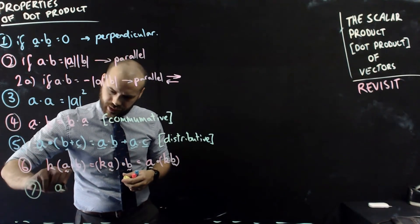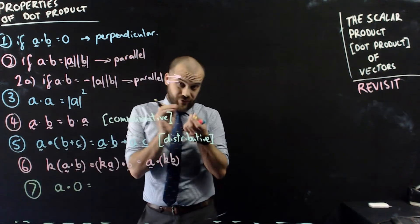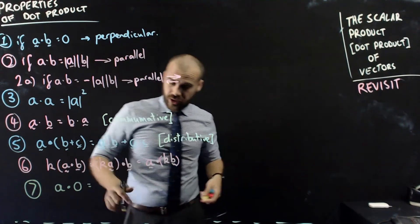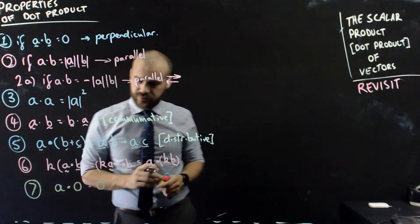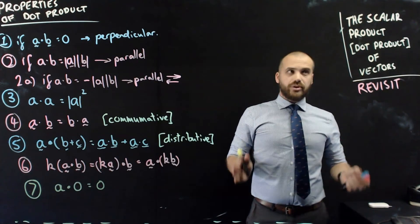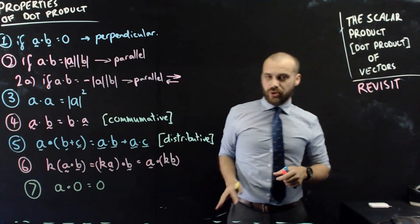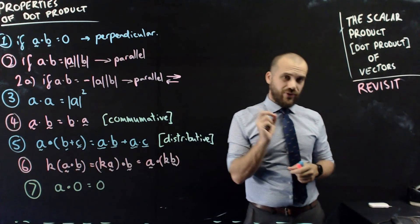Just the last one here for completeness sake. We can say that a dot product 0, a 0 vector, a vector with no magnitude, is obviously going to be equal to 0. That's it. That's the scalar dot product of vectors revisited. There's a little bit of new stuff in there. There's some properties we probably haven't formalized yet. That's how you get it done.